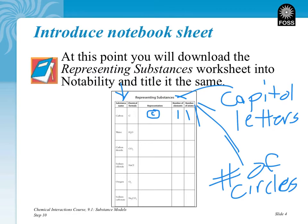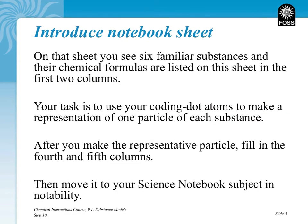There are some more instructions on the next page. It shows you six familiar substances with their chemical formulas listed in the first two columns. Your task is to use your coding dot atoms to make a representation of one particle of each substance. After you make your representation particles, fill in the fourth and fifth columns. Remember, the capital letters give the number of elements, and the total atoms are the total number of circles you put down. Once you're all done, move it back into your science notebook section of Notability.